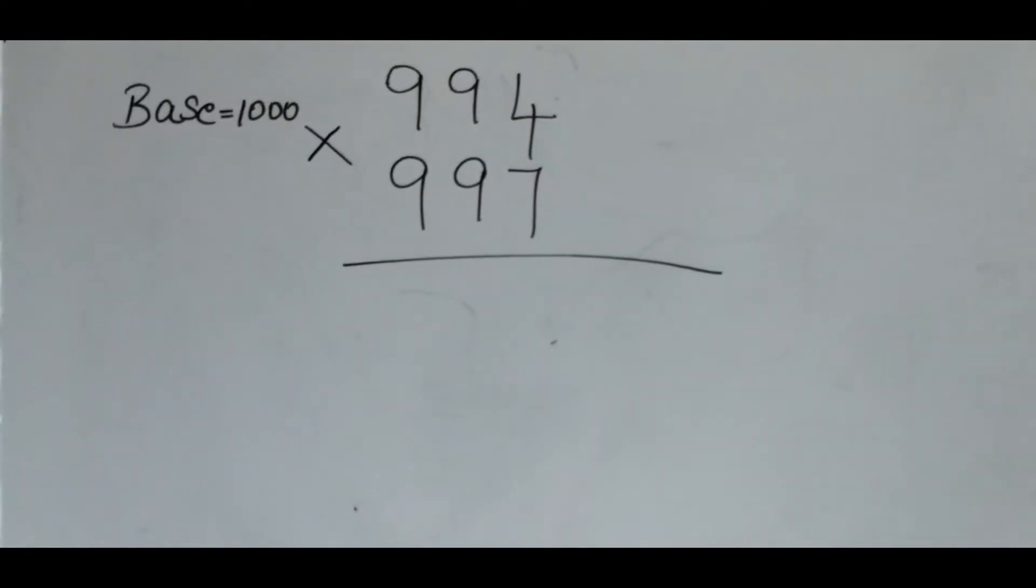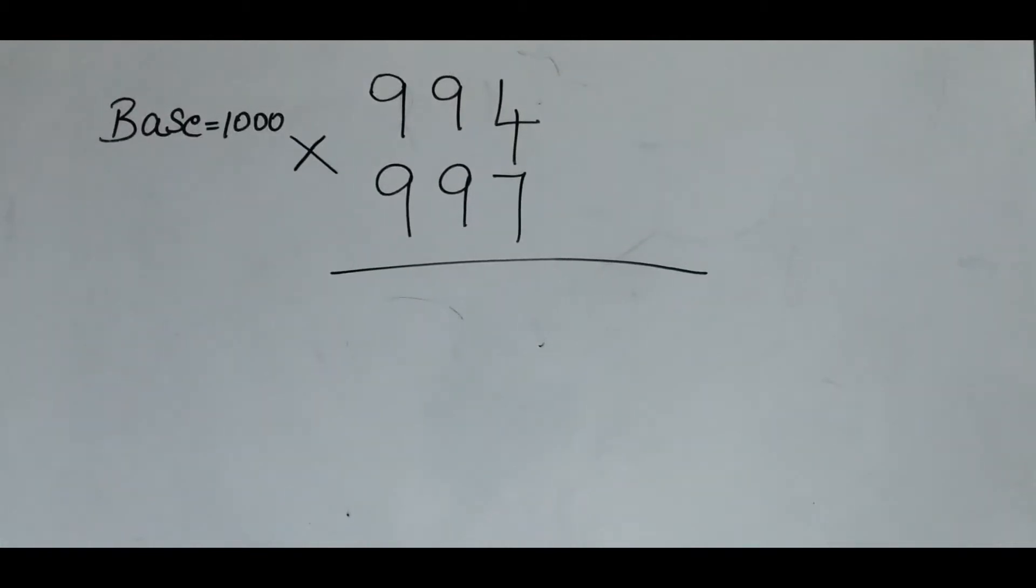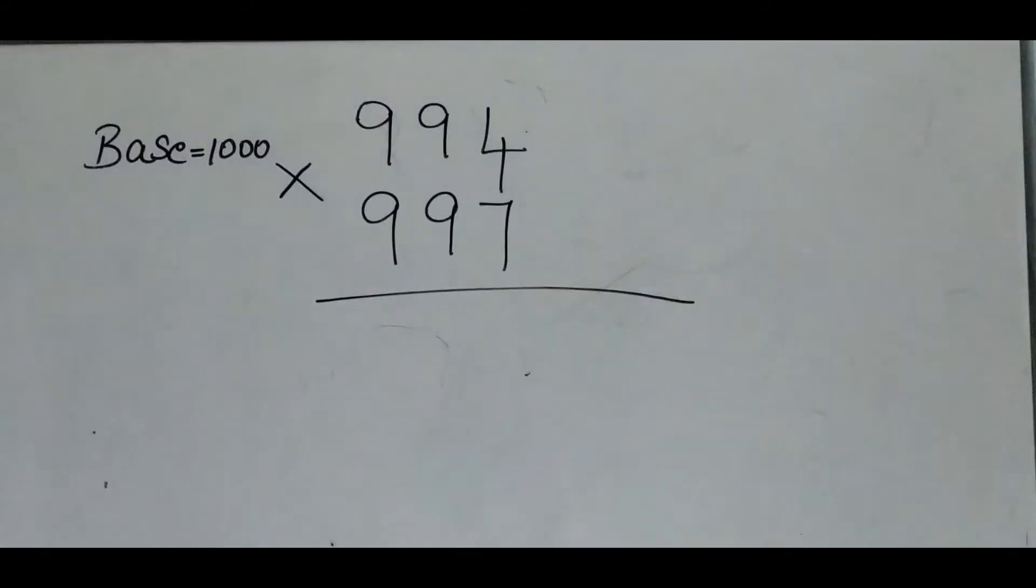First, let's use a below the base example. Let's use 994 times 997 as our example.